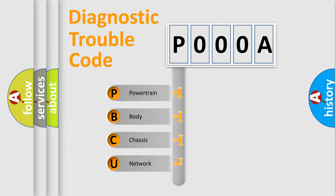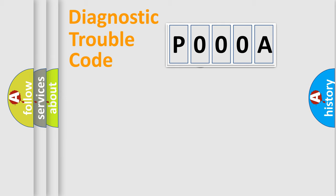We divide the electric system of automobile into four basic units: powertrain, body, chassis, and network. This distribution is defined in the first character code.